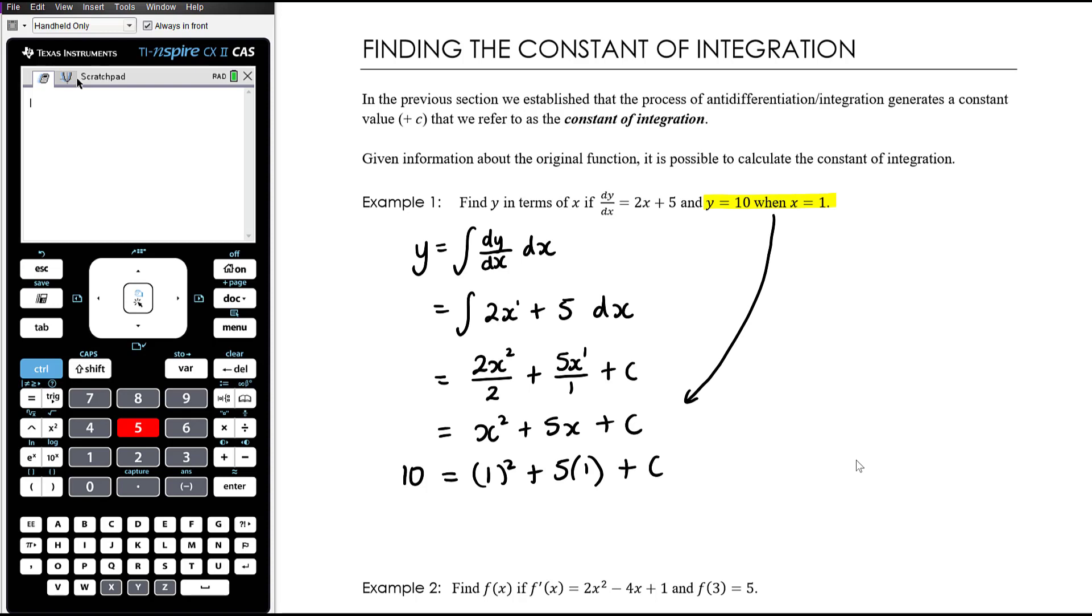And this is going to allow us to work out what c is. So 10 is going to be equal to 1 plus 5, so that's 6 plus c, and so therefore c is equal to 4. And so therefore find y in terms of x. Let's be clear about what the question's asking us, so let's make sure we answer the question: y is equal to x squared plus 5x plus 4.